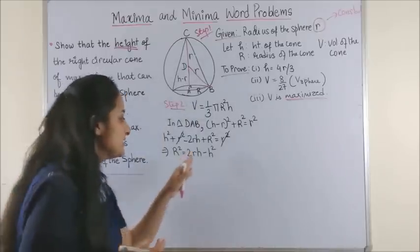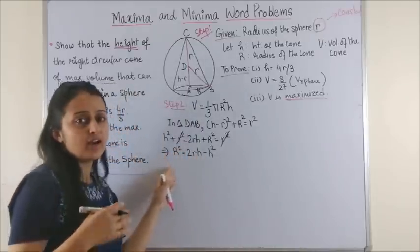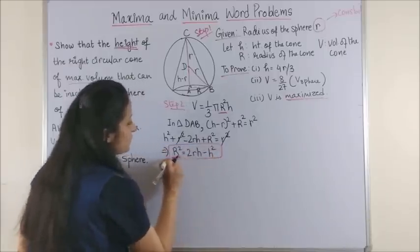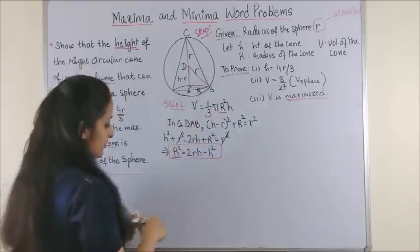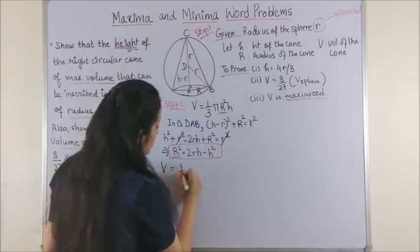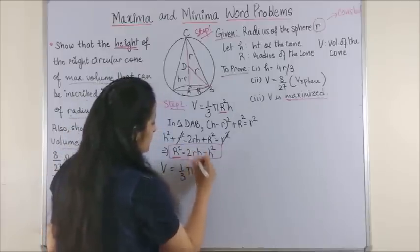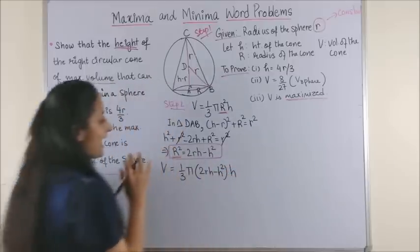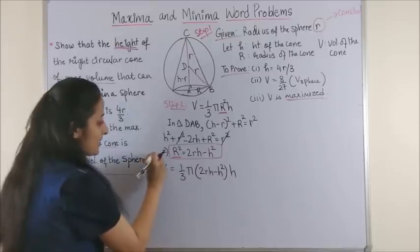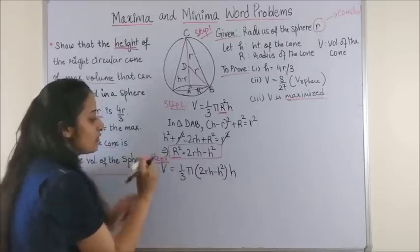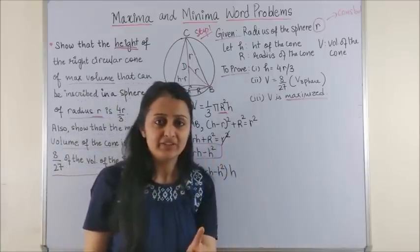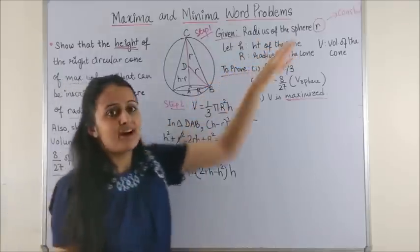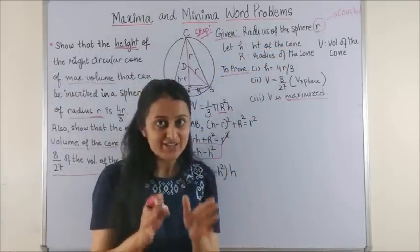Let's simplify. Now of course you have two choices: either h in terms of capital R or vice versa. Now R square is much easier to put in this. So your volume of the cone becomes 1 by 3 pi, in place of R square I put 2rh minus h square into h. And now as a part of your Step 3, your volume has been converted in terms of only one variable. Why one variable? Because if you remember, small r is just a constant, so the only variable is h.